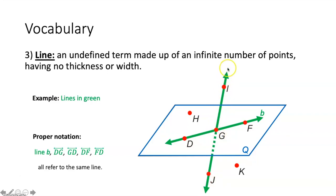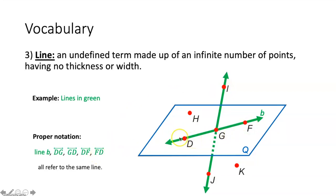Those would all denote the same line. Note: in order to define a line, you only need two points. You don't need three in a row. You just need two points in order to write a line.